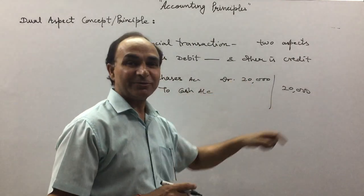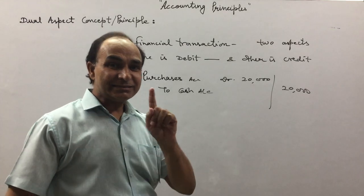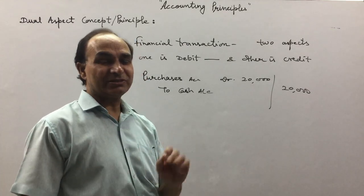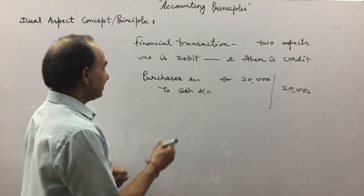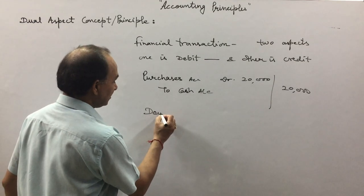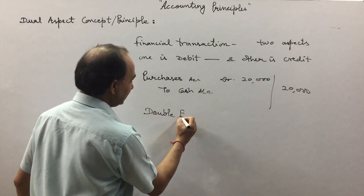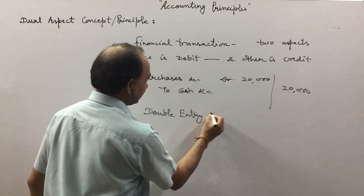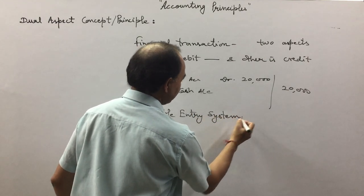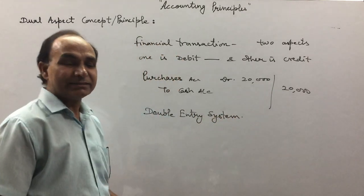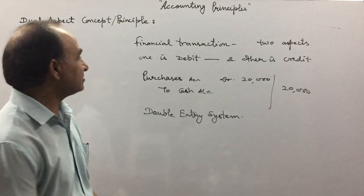...credited of equal amounts. This system of recording transactions is termed as the double entry system. It is due to this concept...